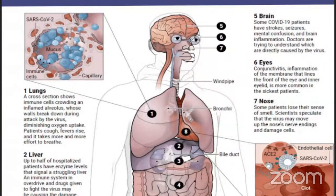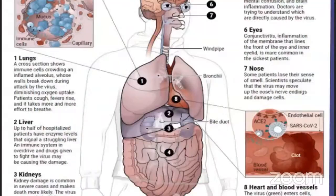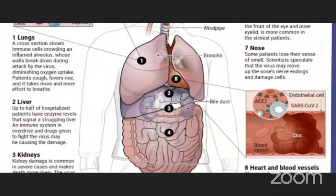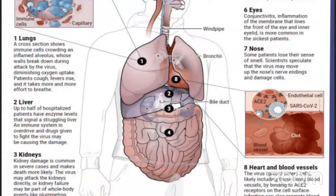COVID-19 effect on the brain: some patients have reported strokes, seizures, mental confusion, and brain inflammation. Doctors are trying to understand which are directly caused by the virus. Effect on eyes: conjunctivitis — inflammation of the membrane lining the front of the eye and inner eyelid — is more common in the sickest patients. COVID-19 on the nose: some patients lose their sense of smell; scientists speculate the virus may move up to the nose nerve endings and damage cells.